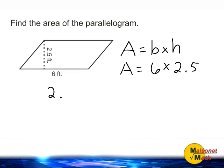So let's multiply 2.5 by 6. 6 times 5 is 30, so we put a 0 here and carry our 3. 6 times 2 is 12 plus 3 more is 15.